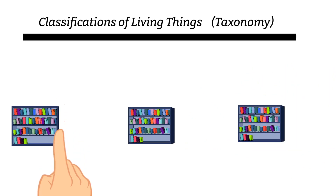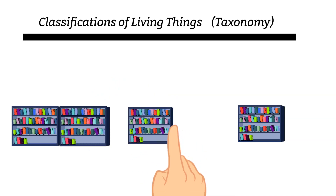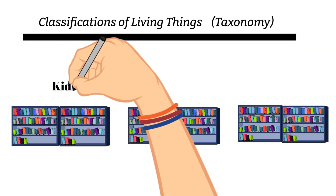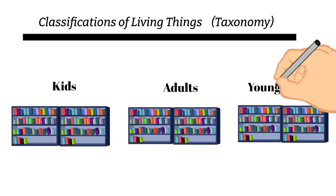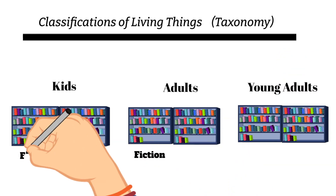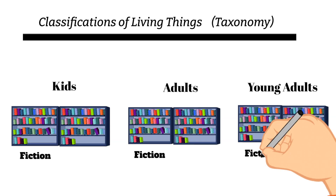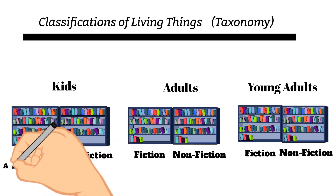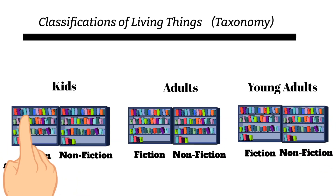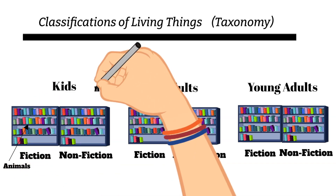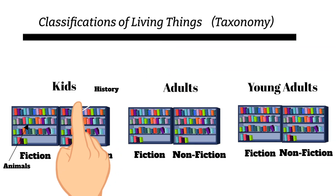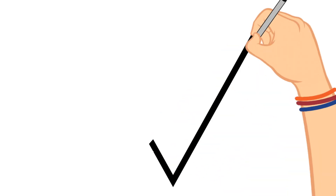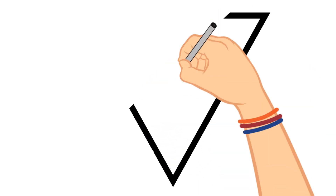Classifications of living things can be thought of like the classification system in a library. If you've ever been to a library, there are different sections containing different types of books — a mystery section, a kids section, an adventure section, a young adult section. Those areas are then divided further into fiction or nonfiction, and then further divided by the type of book.